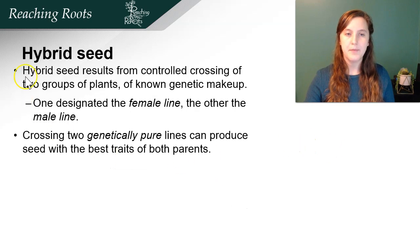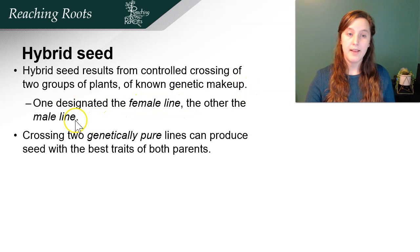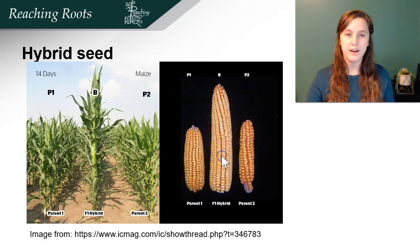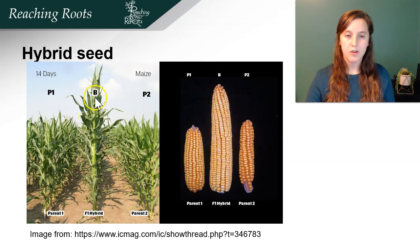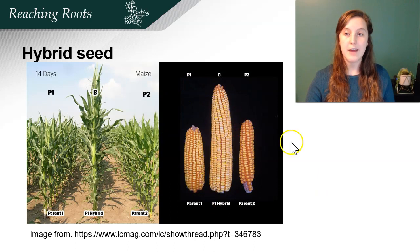Hybrid seeds result from controlled crossing of two groups of plants of known genetic makeup — one designated the female line, the other the male line. Crossing two genetically pure lines can produce seeds with the best traits of both parents, again called hybrid vigor. For example in corn, you have parent one and parent two. If you cross them you get an F1 hybrid that is taller and has a larger corn cob and is higher yielding.